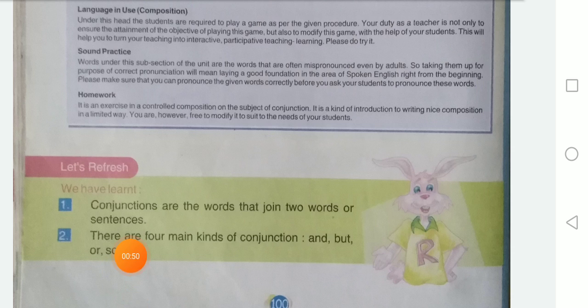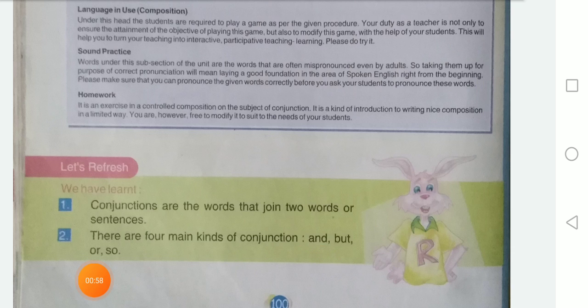There are four main kinds of conjunction. इस तरीके के चार कंजेक्शन है, जैसे के and, but, or, so — ये चार कंजेक्शन है।